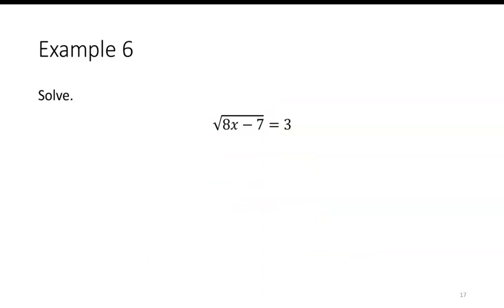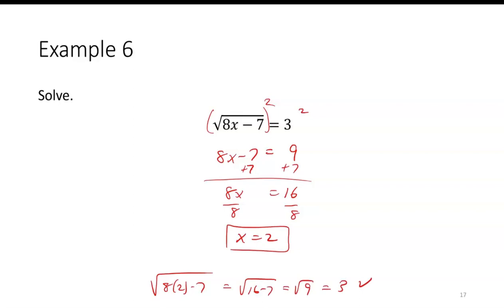How about the square root of 8x minus 7 equals 3? I square both sides. I'll have 8x minus 7 is equal to 3 times 3, or 9. Add 7, now I'll have 8x is equal to 16. Divide by 8, I get x is equal to 2. If I check it, 8 times 2 minus 7 is the square root of 16 minus 7, which is the square root of 9, and that is indeed 3. So that checks.